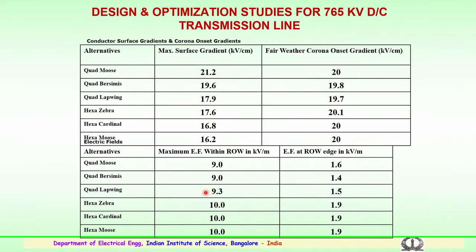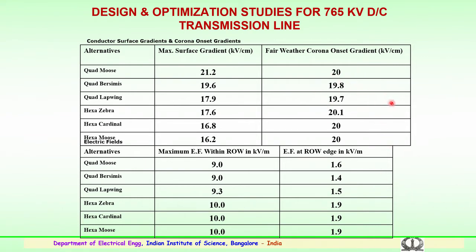Design and optimization carried out for 765 kV double circuit transmission line gives values of maximum surface gradient in kV/cm and fair weather corona onset voltage in kV/cm. For various conductor alternatives — quad moose, quadruple Barsimis, quadruple lapwing, hexagonal 6-conductor zebra, 6-conductor cardinal, and hexagonal moose — surface gradient studies show values from 21.2 to 16.2 kV/cm. Corona onset gradients were seen to be anywhere between 19.7 to 20.1 kV/cm.